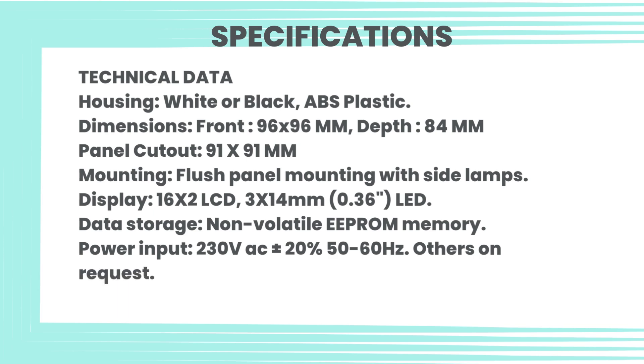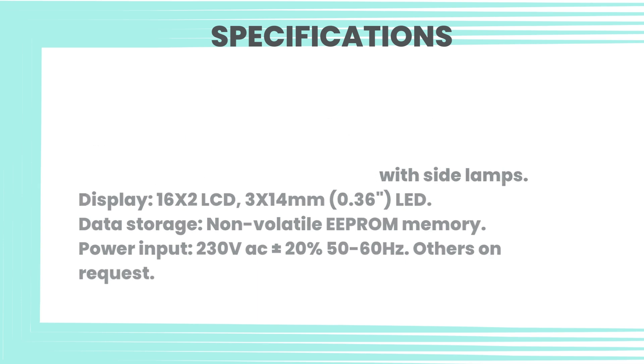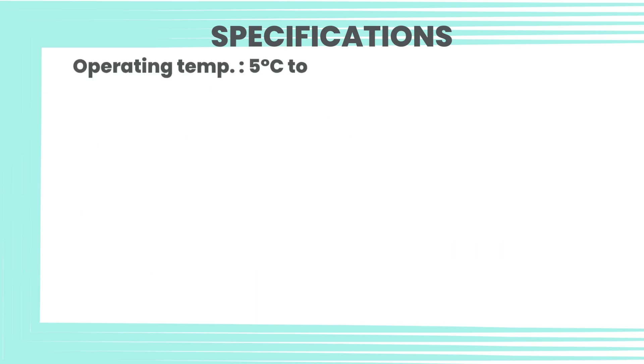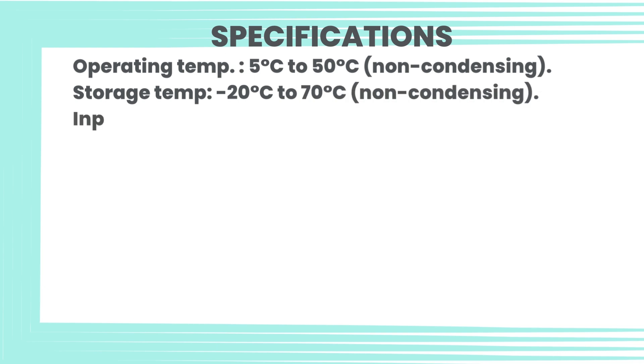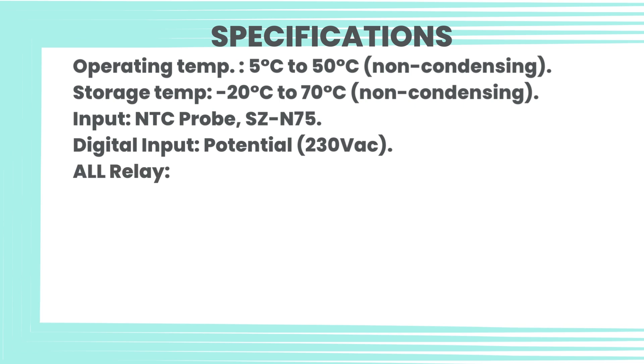Power input: 230 volt AC plus or minus 20 percent, 50 to 60 hertz, others on request. Operating temperature: 5 degrees Celsius to 50 degrees Celsius, non-condensing. Storage temperature: minus 20 degrees Celsius to 70 degrees Celsius, non-condensing. Input: NTC probe SCN75. Digital input: potential free, 230 VAC. All relay: 5 ampere / 250 volt AC.